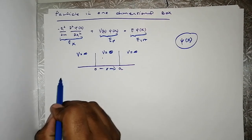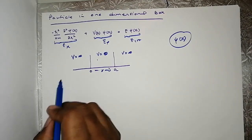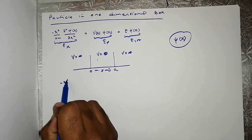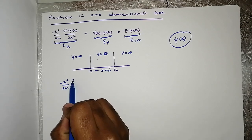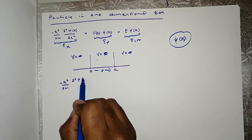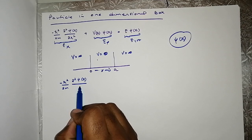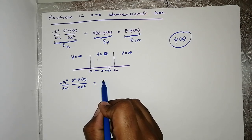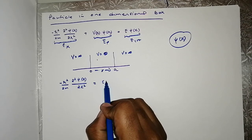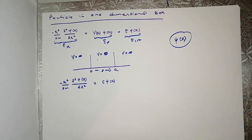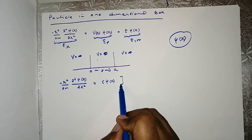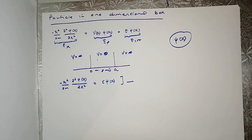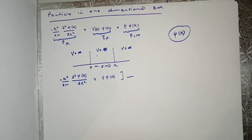This equation will take another form: it's going to be ℏ²/2m with a second derivative — there's no need for a partial derivative since we are dealing with a single variable. This will be the Schrödinger equation for the particle in a one-dimensional box.